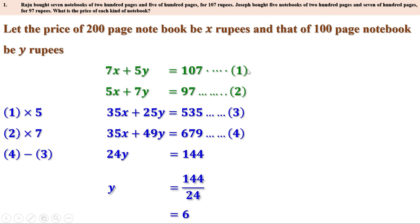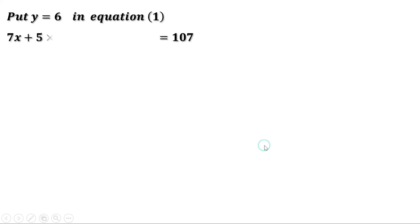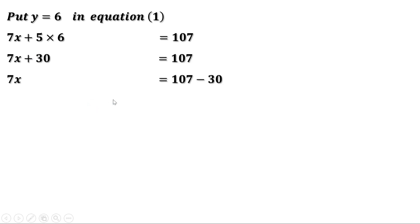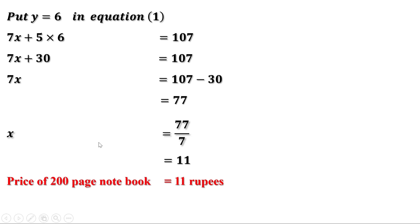We can put this value in any of the four equations to get an equation in X only. Putting Y equal to 6 in the first equation gives 7X plus 5 into 6 equal to 107. Since 5 into 6 is 30, we have 7X plus 30 equal to 107, so 7X equal to 77. Therefore X equal to 77 divided by 7, which equals 11. So the price of a 200-page notebook is 11 rupees and the price of a 100-page notebook is 6 rupees.